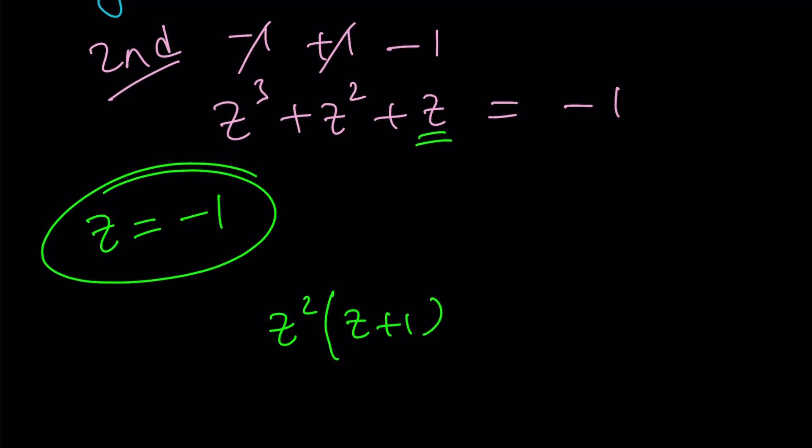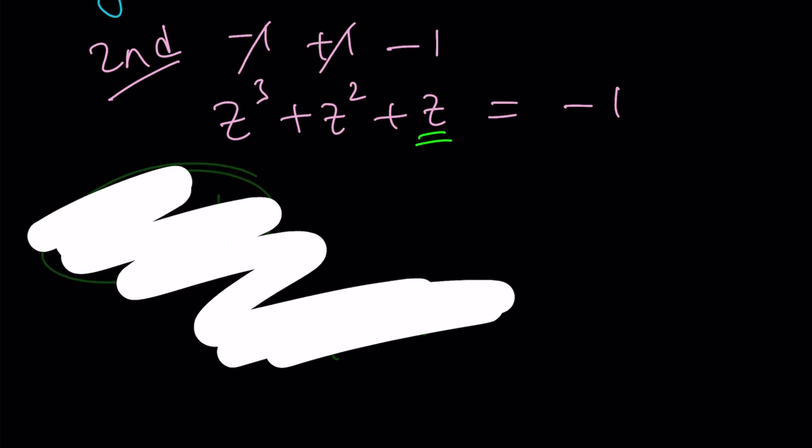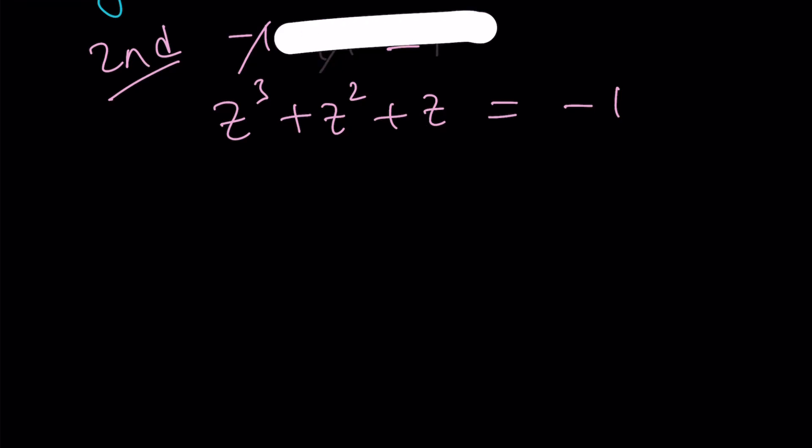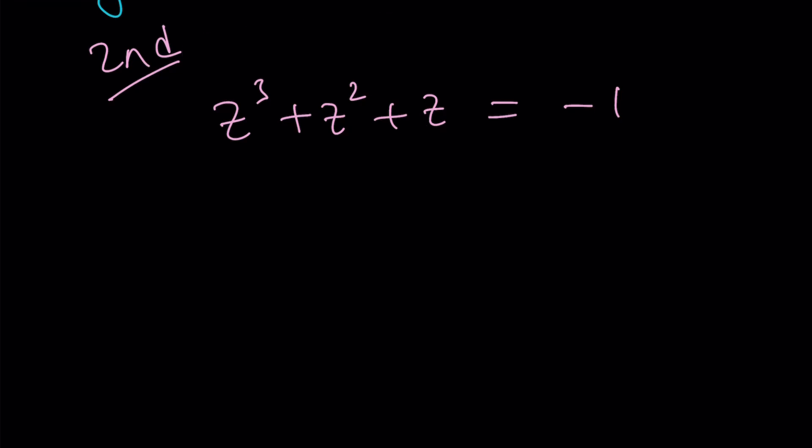That's actually the second method but we didn't have to know that z was equal to negative 1 so let's just forget it. Suppose you didn't check. You should always check but pretend you didn't know this. Now here's what we're going to do. Add 1 to both sides and make it a full cubic. Great.